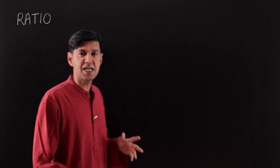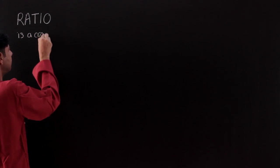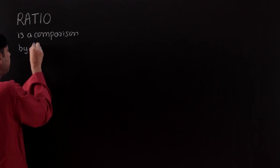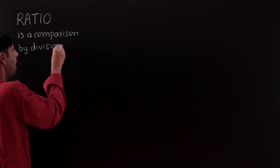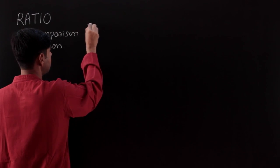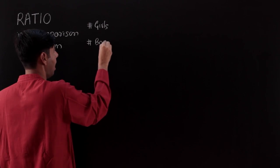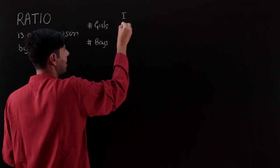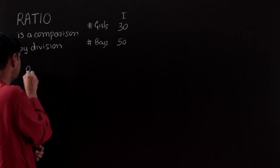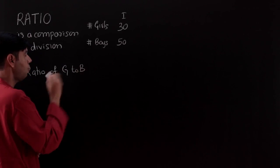Ratios are also important in weighted average concepts, so make sure you understand it thoroughly. A ratio is a comparison — we are going to compare two or more quantities by the division process. Let's learn through an example: a classroom has a number of girls and number of boys. One classroom has 30 girls and 50 boys.